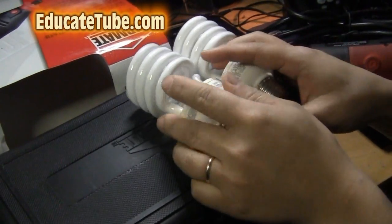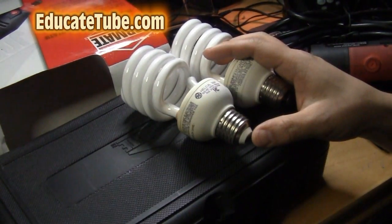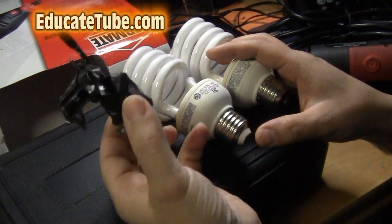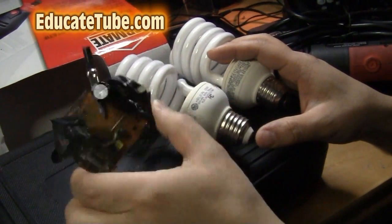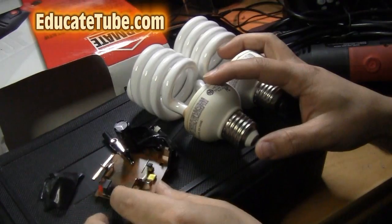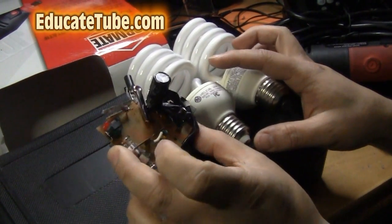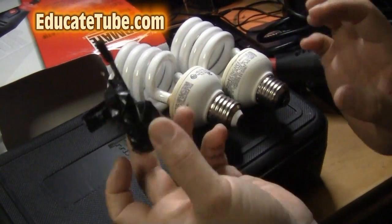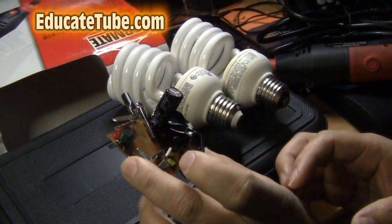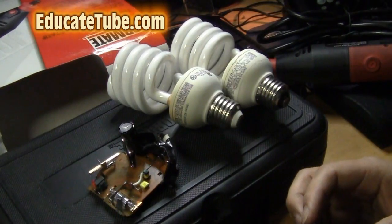Welcome back to EducateTube.com and I am Suki, your host. If you wonder what you should do with a dead CFL light bulb and a disposable flash camera circuit, well, I'm going to show you how to make a battery powered CFL light bulb using a disposable camera circuit. Let's get started.